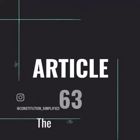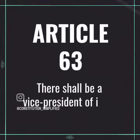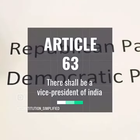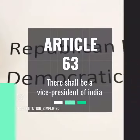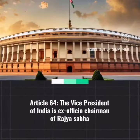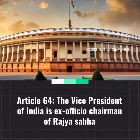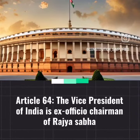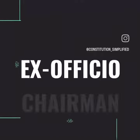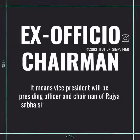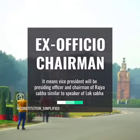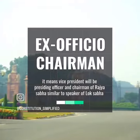Article 63 only says that there should be a Vice-President of India. Article 64 says that the Vice-President of India is Ex-Officio Chairman of Rajya Sabha. The Ex-Officio Chairman means the Vice-President will be Presiding Officer and Chairman of Rajya Sabha, similar to the Speaker of Lok Sabha.